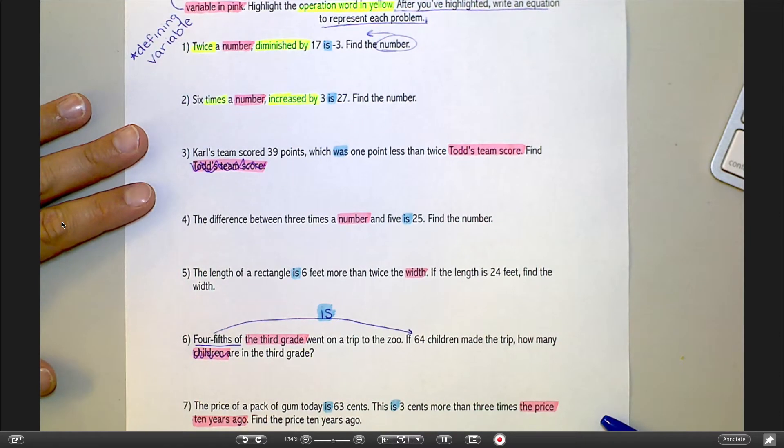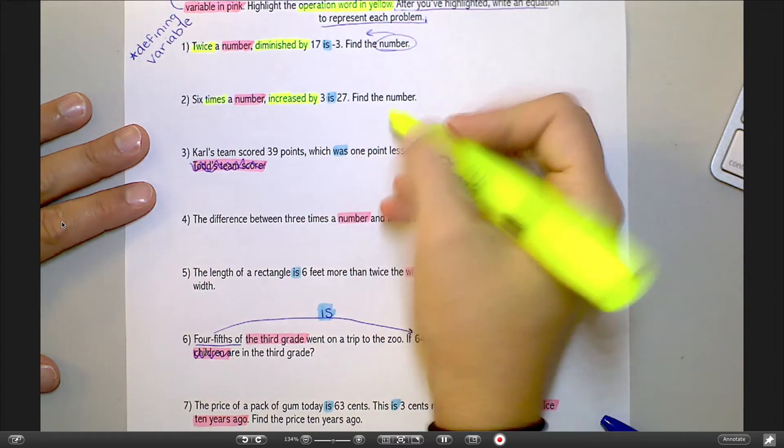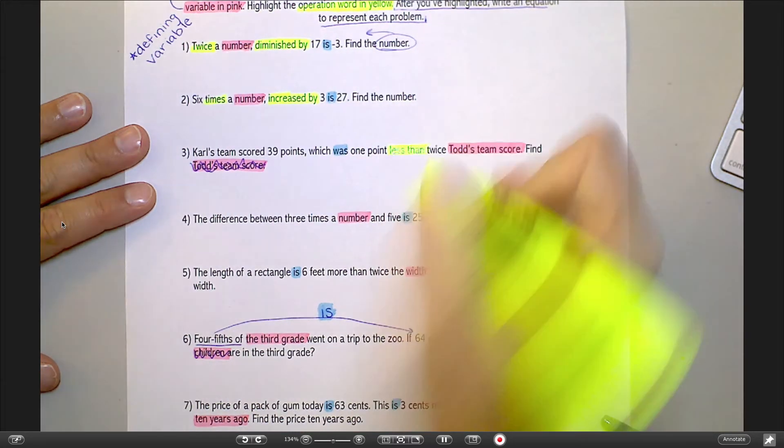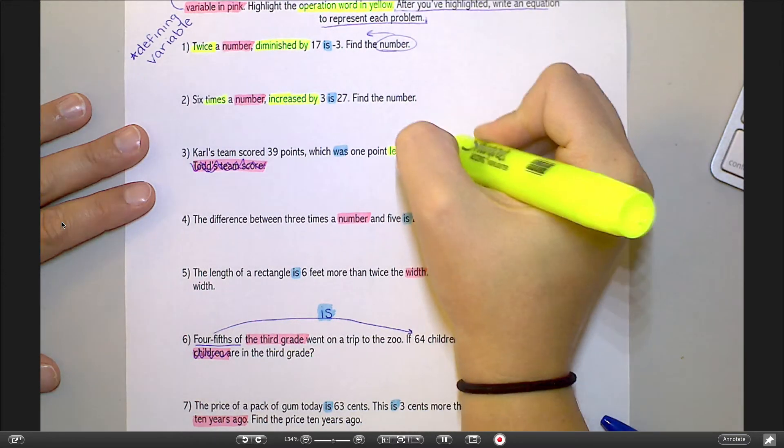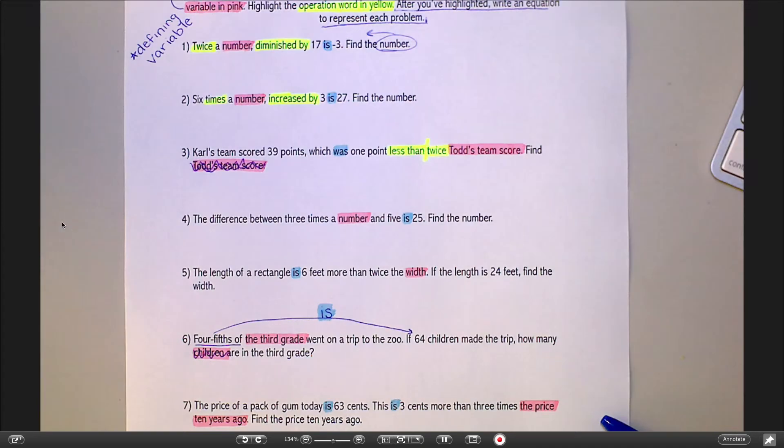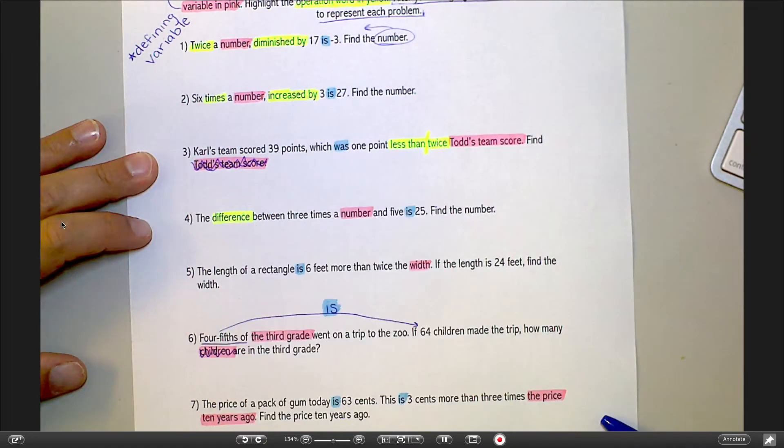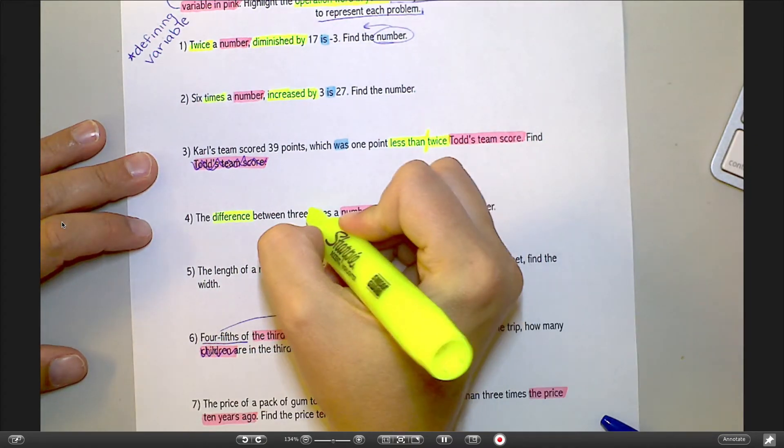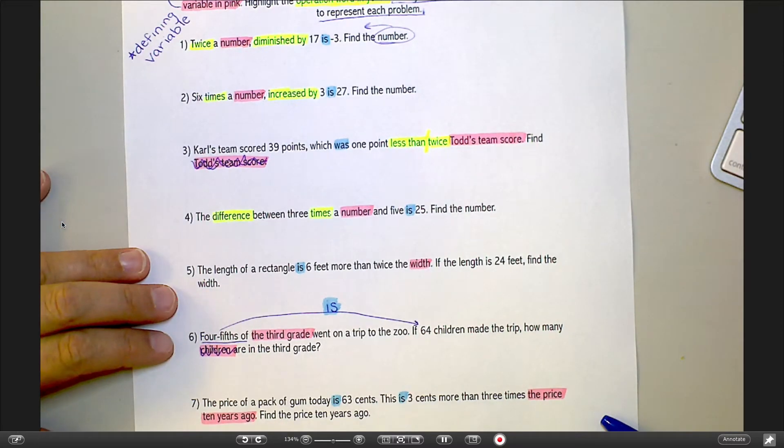Number three, one point less than. Less than is an operation word, means subtraction. And then there's that twice again. That's actually two different words. Number four, the difference between three times a number and five is 25.